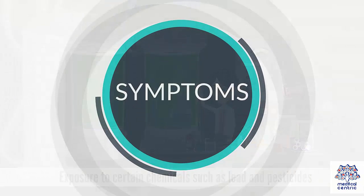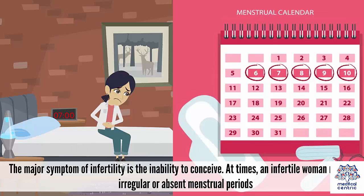Symptoms: The major symptom of infertility is the inability to conceive. At times, an infertile woman may also have irregular or absent menstrual periods.